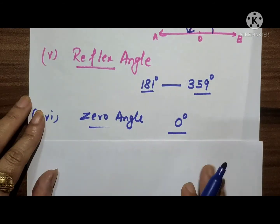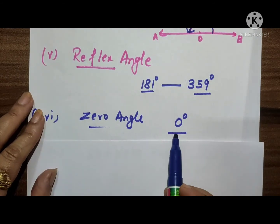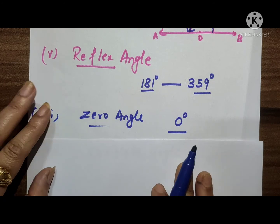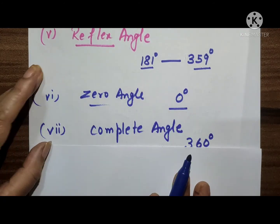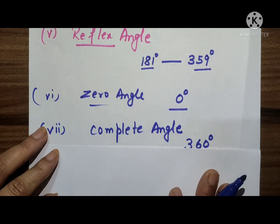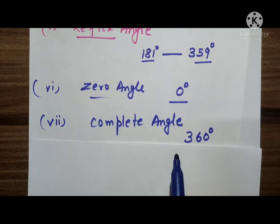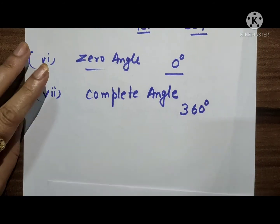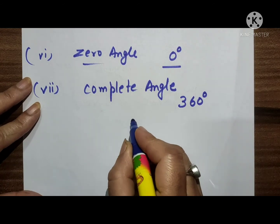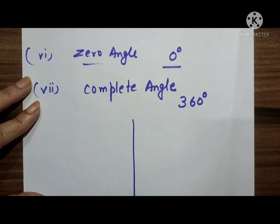Next is the zero angle. An angle whose measure is 0 degrees is called a zero angle. And a complete angle is an angle whose measure is 360 degrees. I hope that is clear.